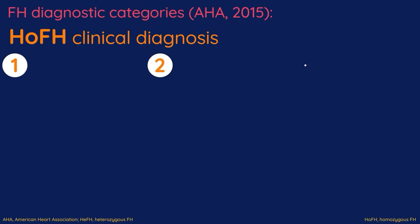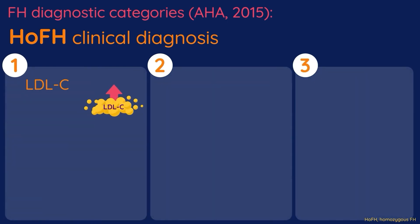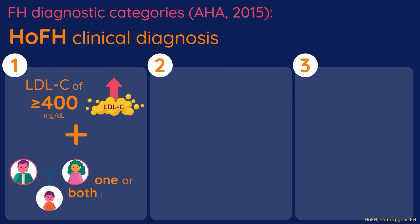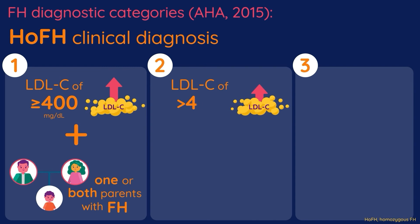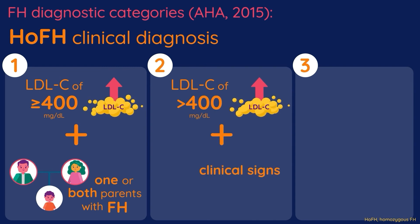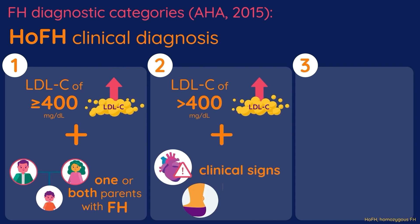HoFH may be diagnosed clinically in three different ways. First, an untreated LDL-C threshold of greater than or equal to 400 mg per deciliter, and one or both parents with FH, though occasionally these patients will have an LDL-C less than 400 mg per deciliter. Second, an untreated LDL-C of greater than 400 mg per deciliter with clinical signs, including aortic valve disease or xanthomas before 20 years of age.